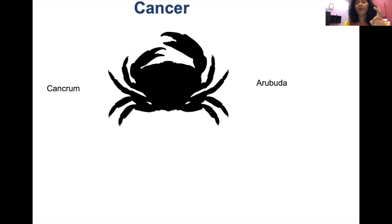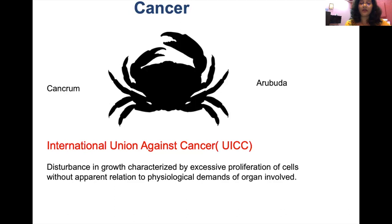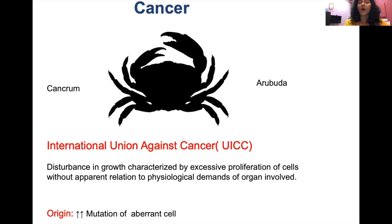Cancer is an excessive, abnormal, incoordinate, and autonomous proliferation of cells which does not correspond to the demand of that organ. The International Union Against Cancer (UICC) has described cancer as a disturbance in growth characterized by excessive proliferation of cells without apparent relation to physiological demand of the organ. Most cancerous cells are derived from parent cells present in everyone's body that undergo mutation and division.